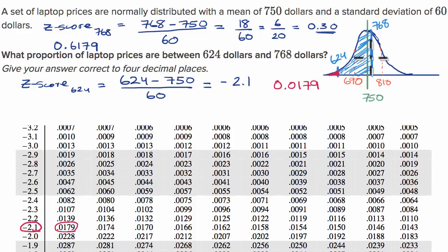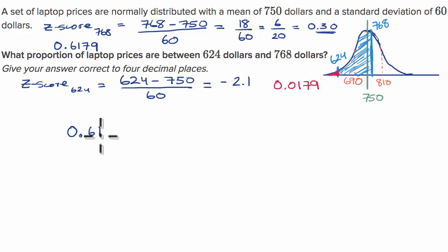If we want to figure out the proportion that's in between the two, we just subtract this red area from this entire area, the entire proportion that's less than 768, to get what's in between. 0.6179 - that's this entire area - minus 0.0179 to get 0.6. So if we want to give our answer to four decimal places, it would be 0.6000, or another way to think about it is exactly 60% between 624 and 768.